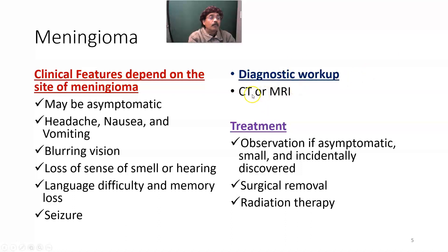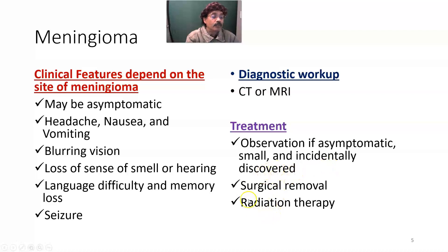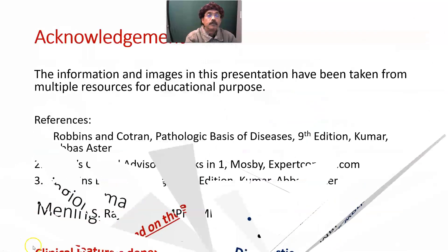Diagnostic workup includes computed tomography and magnetic resonance imaging. Treatment: if the meningioma is asymptomatic, small, and incidentally discovered, observation is appropriate. But if it is increasing in size, surgical removal is indicated. Radiation therapy is also an essential treatment option for meningioma.